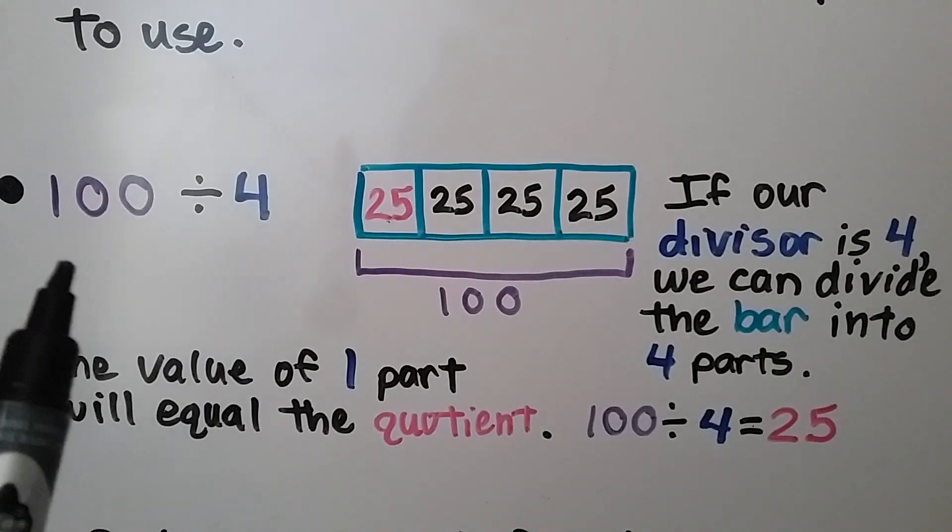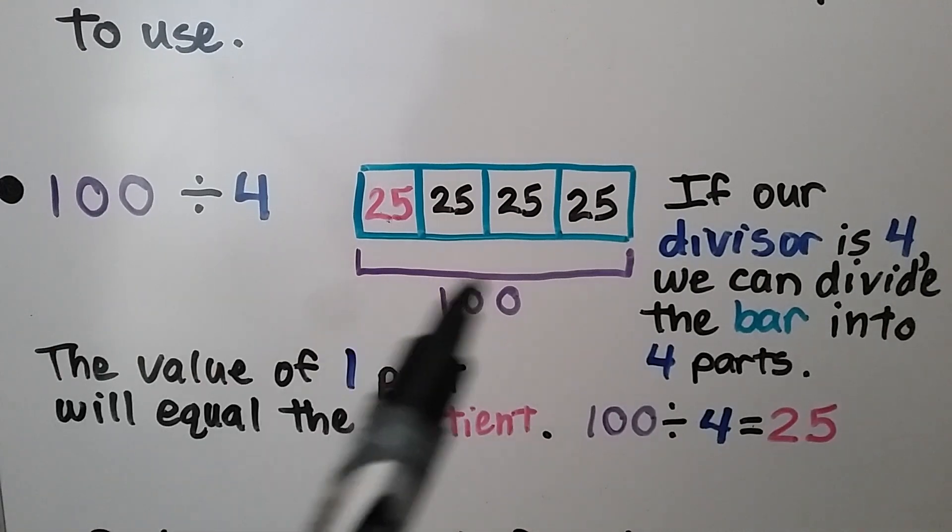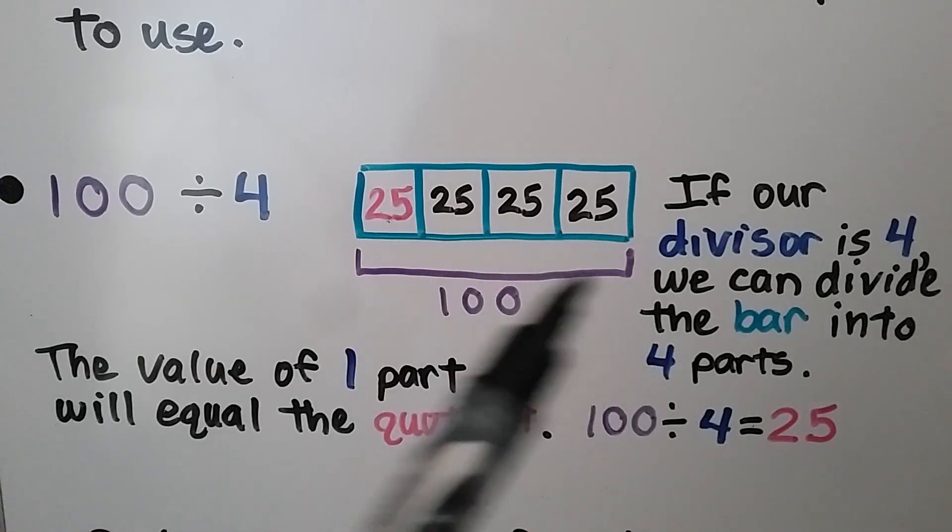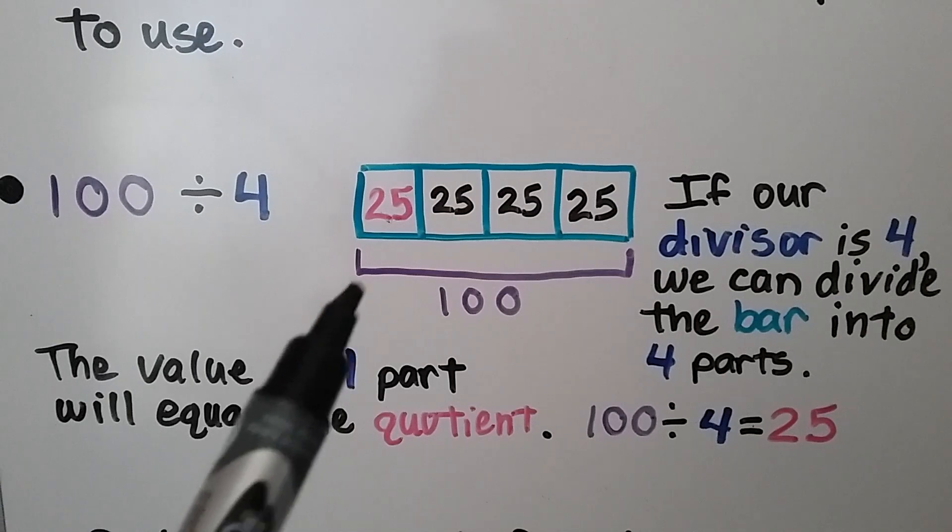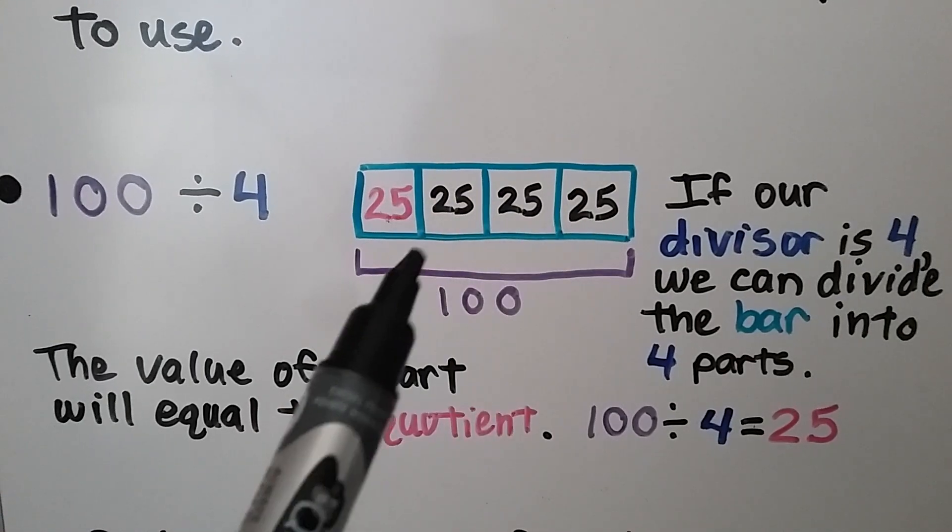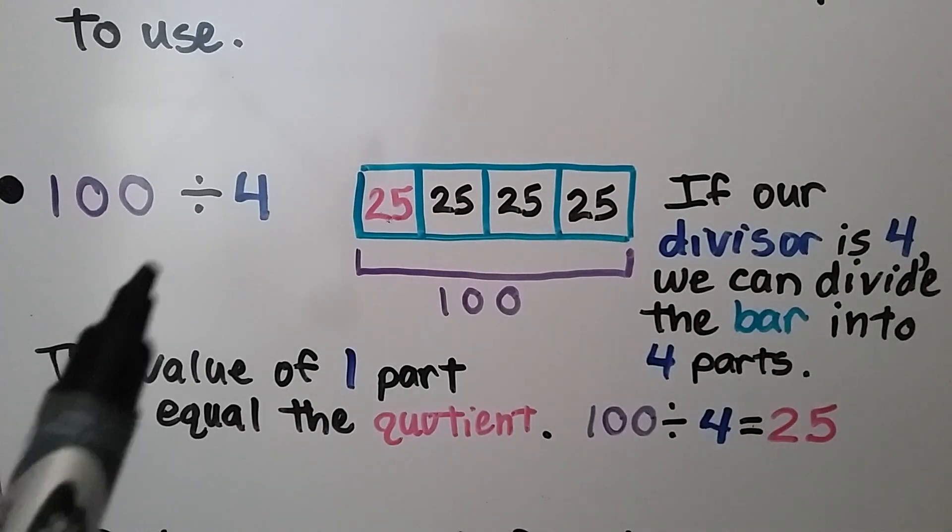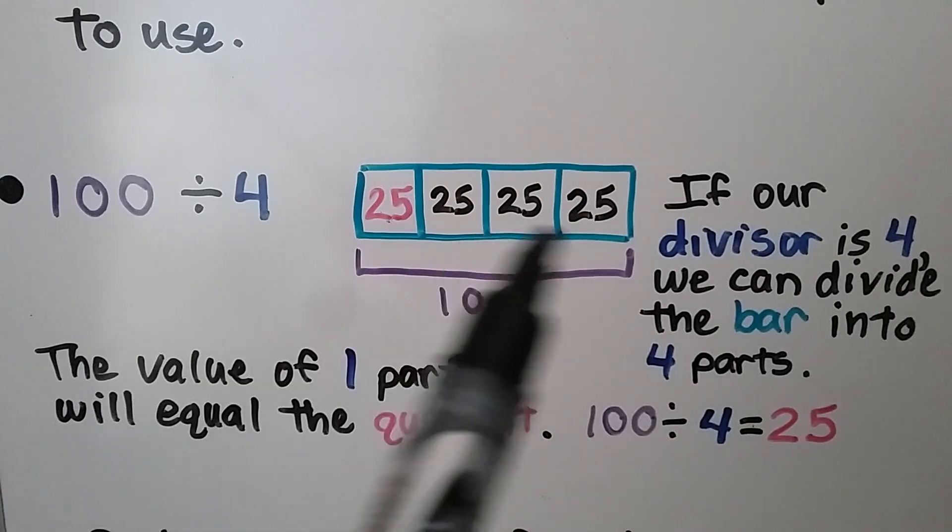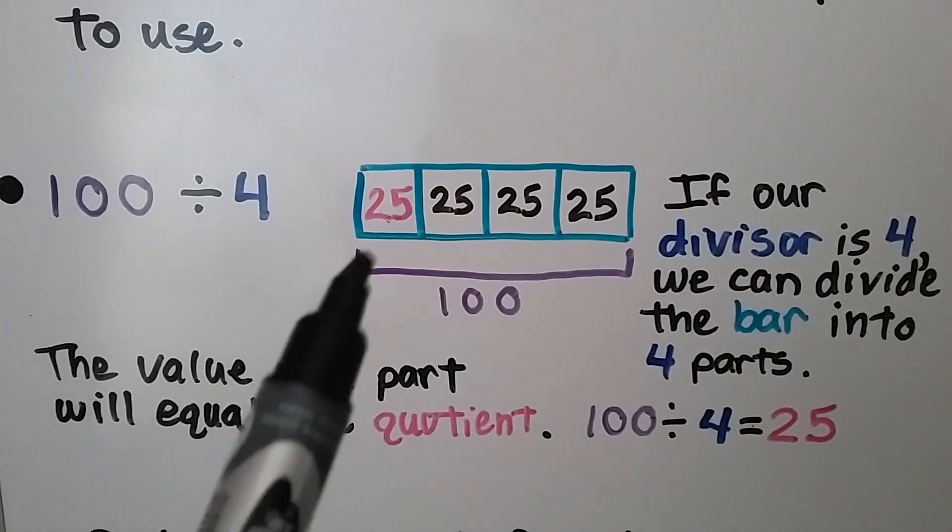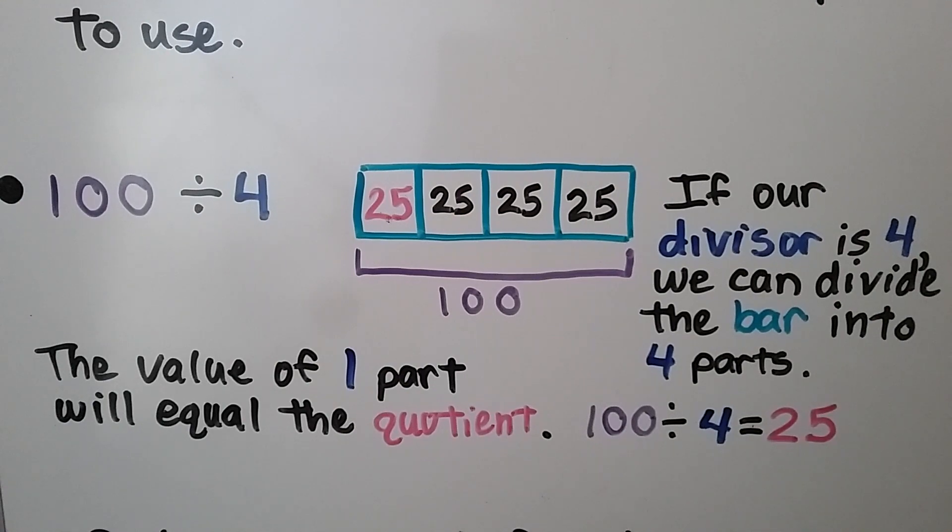Here we have 100 divided by 4. Our bar model represents the 100 for the full bar, and we can break it into 4 equal parts. If our divisor is 4, we divide the bar into 4 parts. And the value of 1 part will equal the quotient. 100 divided by 4 is equal to 25.